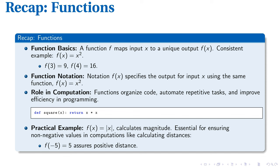Let's start with an important cornerstone. A function maps an input to a unique output. For instance, if we consider the function f of x equals x squared, inputting 3 and 4 would yield 9 and 16 respectively. This notation, f of x, is what we typically use to represent our function.